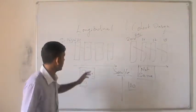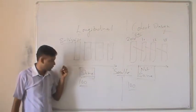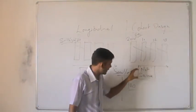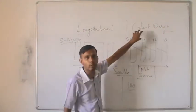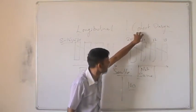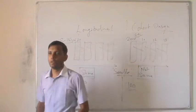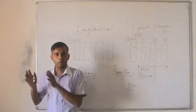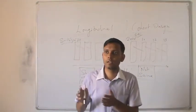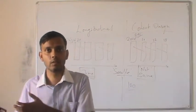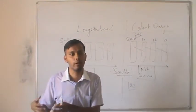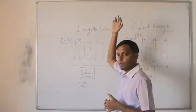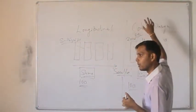Both designs have advantages and disadvantages. In longitudinal design, you study changes in the same set of people over time. In cohort analysis, people are not the same but you can analyze behavioral changes within an age group over time. To summarize: descriptive research can be cross-sectional or longitudinal. Cross-sectional can be single or multiple. Longitudinal design keeps the same sample, while cohort design uses different people with the same demographic profile.